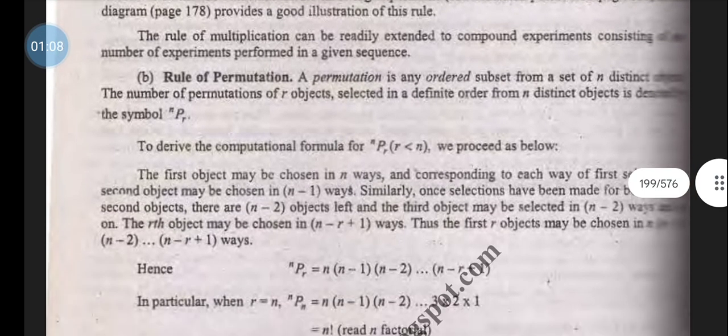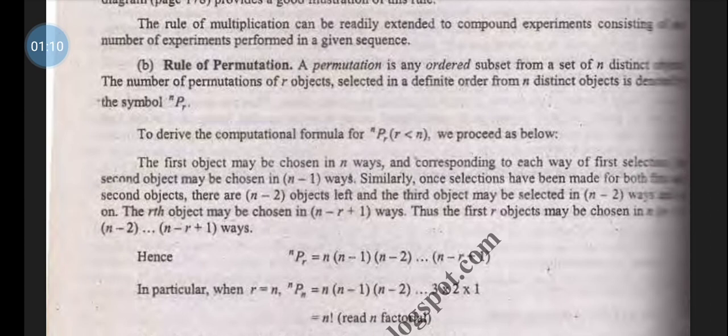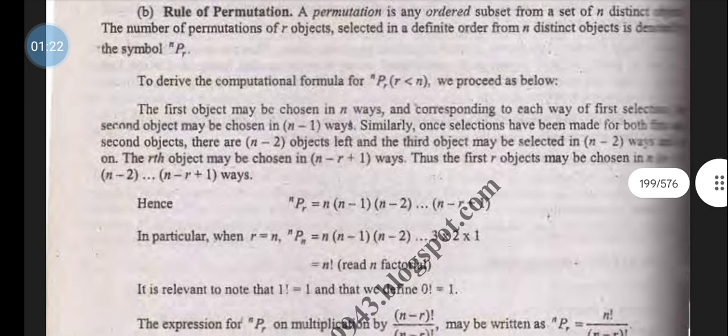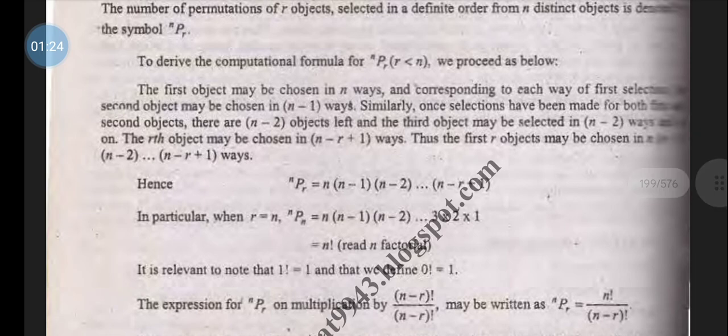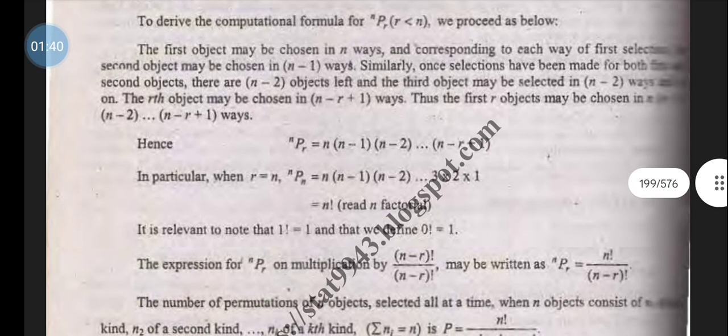Rule of permutation: A permutation is any ordered subset of a set of n distinct objects. The number of permutations of r objects selected in a defined order from n distinct objects is represented as nPr. For the n permutation of r, nPr where r is less than or equal to n. For the first selection we have n choices, for the second object we have n minus 1 choices, and for the rth object we choose n minus r plus 1.